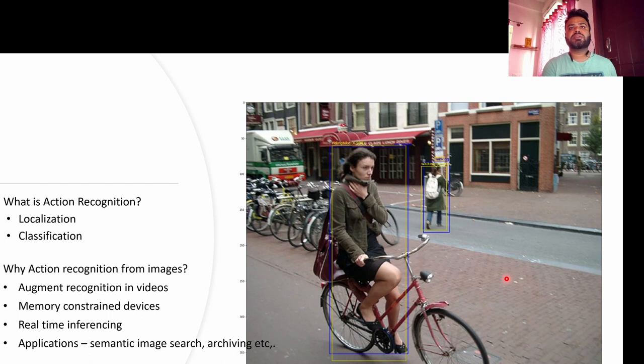Usually when we say action recognition, we typically associate it with videos, and that has been the case with the latest research in this area — they typically work with video datasets. But why do we need action recognition specifically from images? There are some specific advantages. Videos are nothing but a sequence of images, and if we have a way to recognize action from images, that can naturally form a part of the video recognition pipeline, helping improve the accuracy of the model itself.